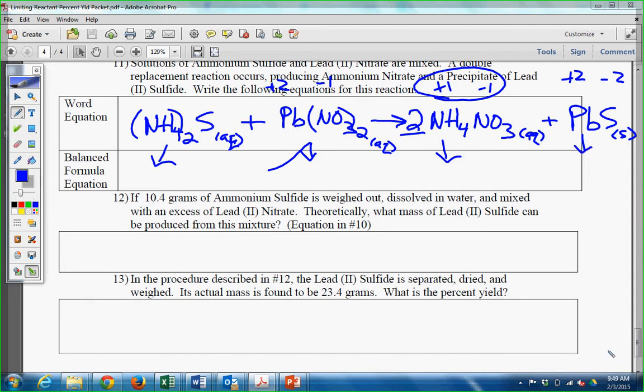We got to make sure we balance it. I always like to do my polyatomics first. I have two ammoniums, I need two ammoniums on this side. I have two nitrates, I already have two nitrates, I'm done. You cannot change the structure of a polyatomic ion. Ammonium is NH4, nitrate is NO3, whatever it may be.